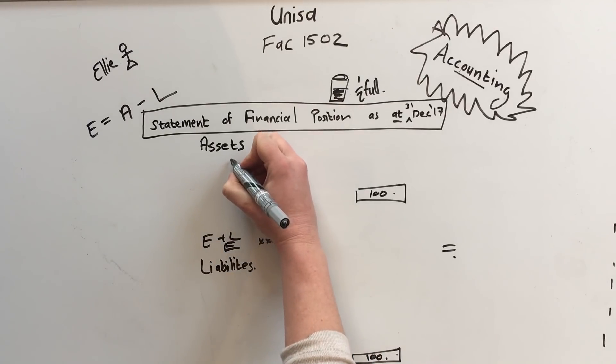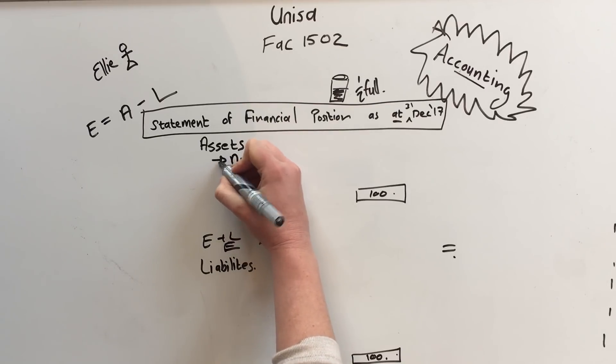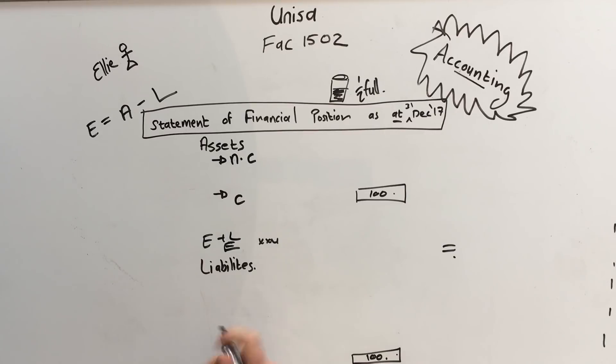Then assets get split up into non-current assets and current assets. So non-current assets and current assets. Liabilities get split up the same way. It has non-current liabilities and current liabilities.